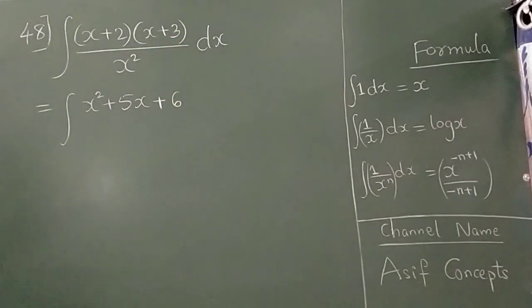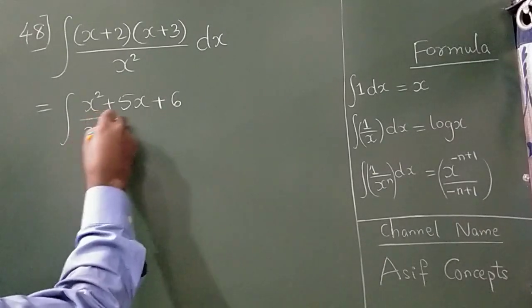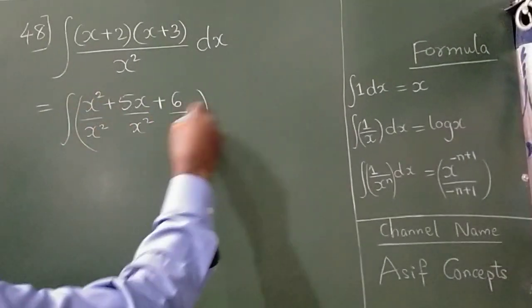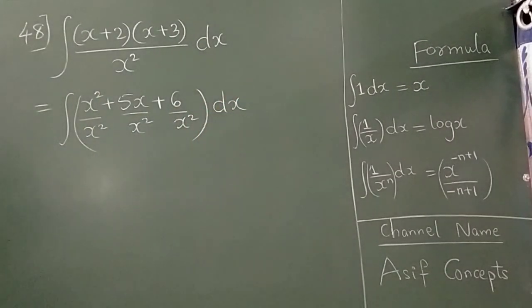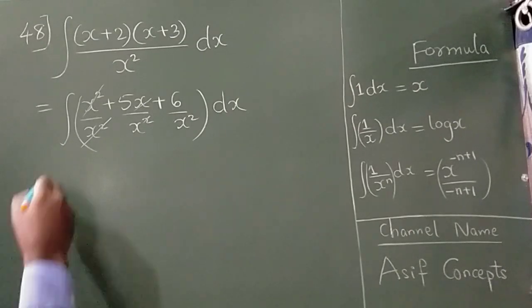2 times 3 is 6. Now this x I am going to separately write. These two get cancelled, one x and one x get cancelled.